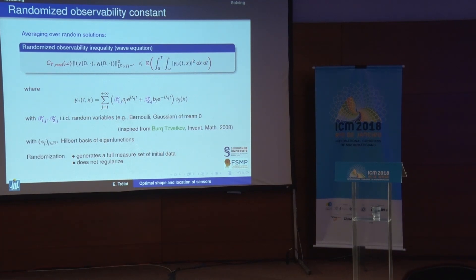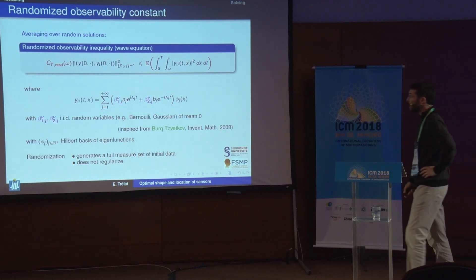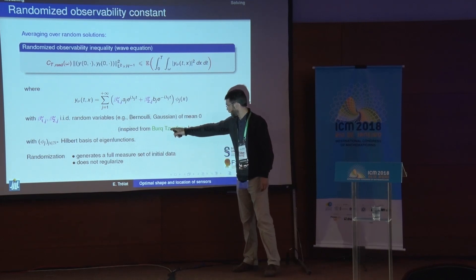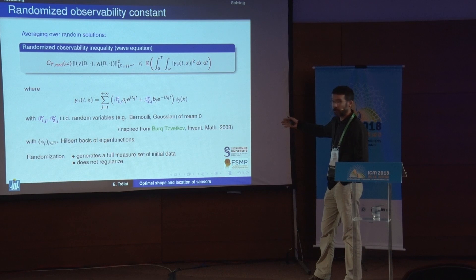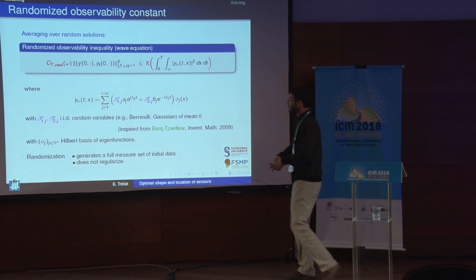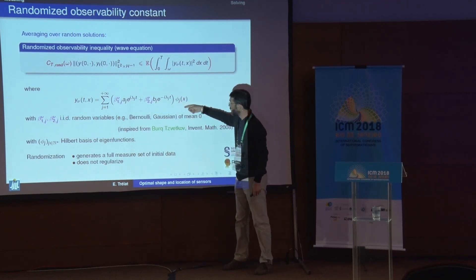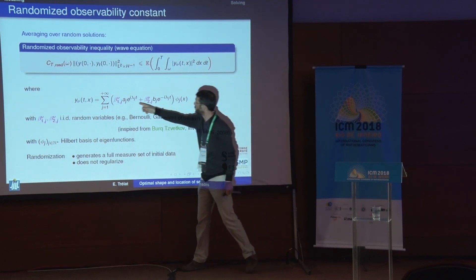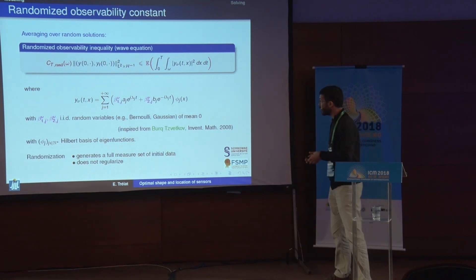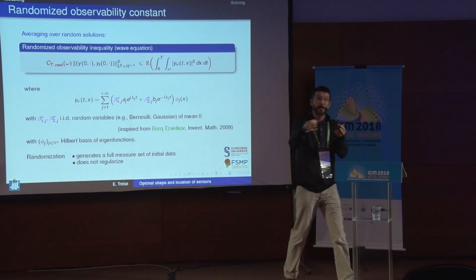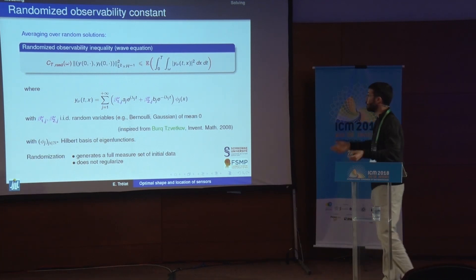Instead of defining a constant over all possible wave solutions, we define a new constant as an infimum over random wave solutions. The randomization is inspired by works of Burk, Tsetkov, and Siegmund in the 1930s: take a Fourier series solution with coefficients a_j and b_j, and multiply each Fourier coefficient by plus or minus one with probability one-half — a Bernoulli law.